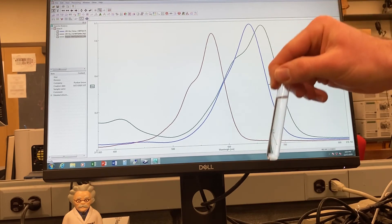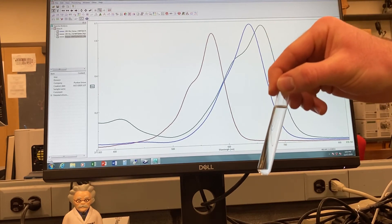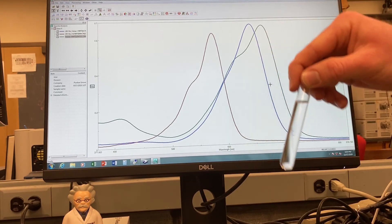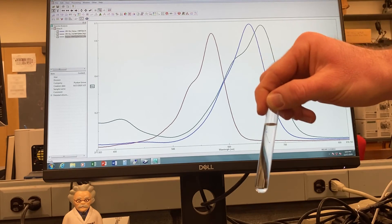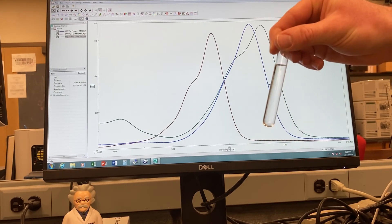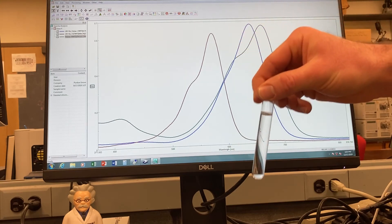This does absorb light. However, it only absorbs light at wavelengths that are imperceptible to the human eye. And since the colors that we can see all pass through this sample, we perceive white light. Hence, it appears colorless.